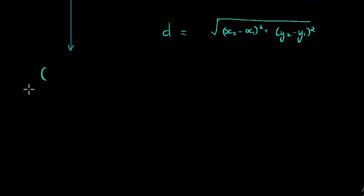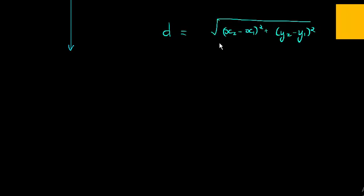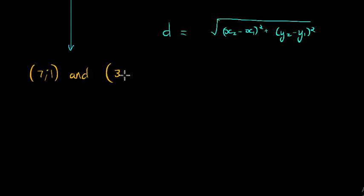Let's just apply it quickly. Let's say we had two points—I'm honestly just thinking up any two random points—let's say (7, 1) and let's say (3, -2). What would be the distance between these two points?